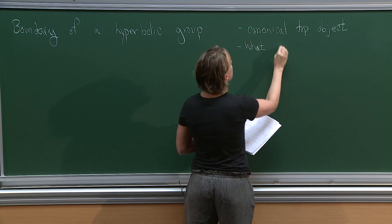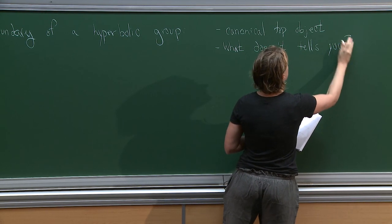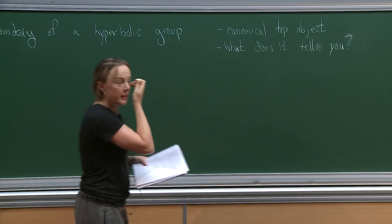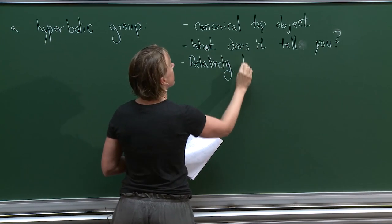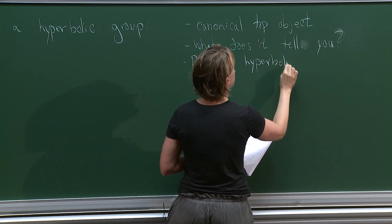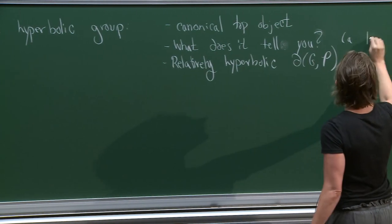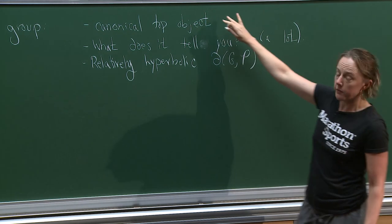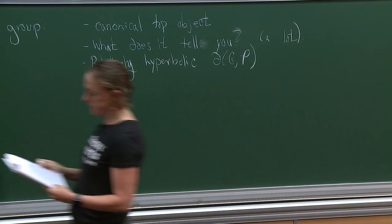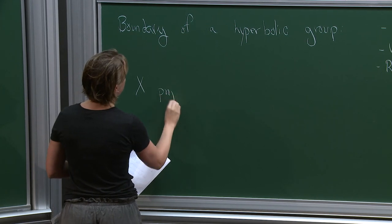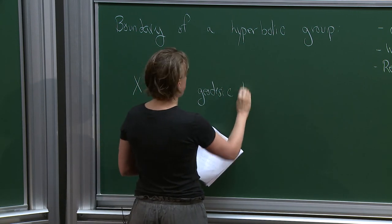I'll show some things that it's good for — what does it tell you? It tells you a lot. I'm going to talk a little bit about relatively hyperbolic geometries. So I want to quickly review this and then spend most of my time on what the boundary of a hyperbolic group actually tells you about that hyperbolic group. So X is going to be a proper — proper is important — geodesic, though that's not so important, but I'll usually be implicitly assuming it — hyperbolic metric space.